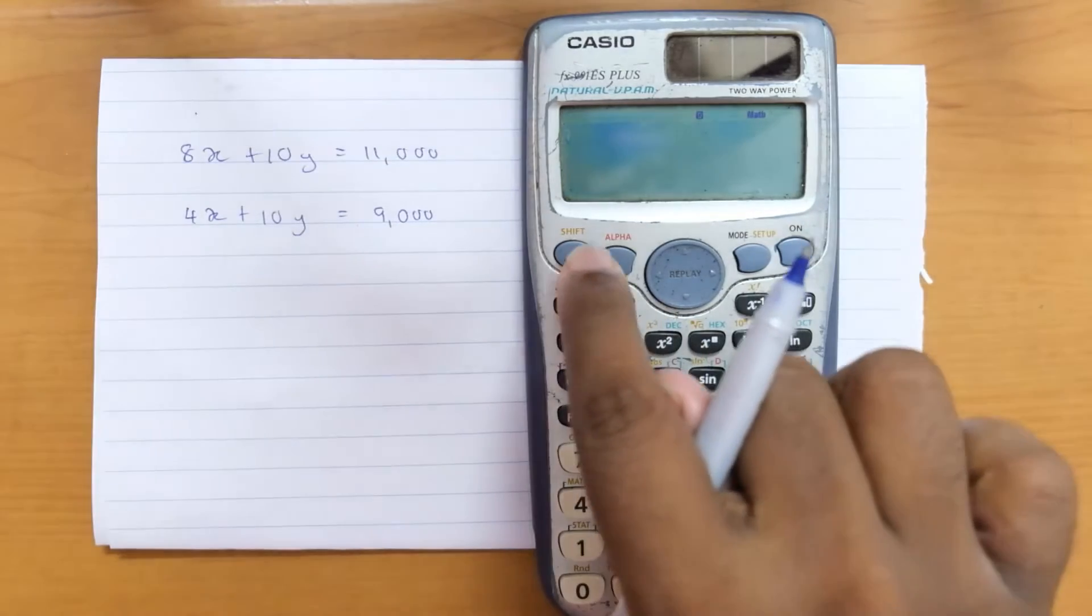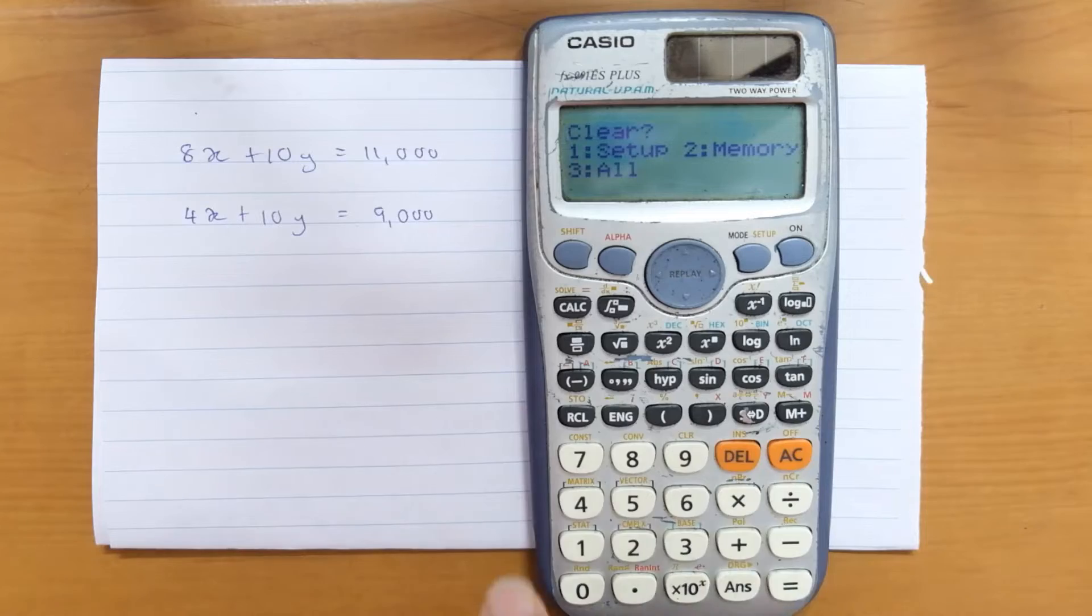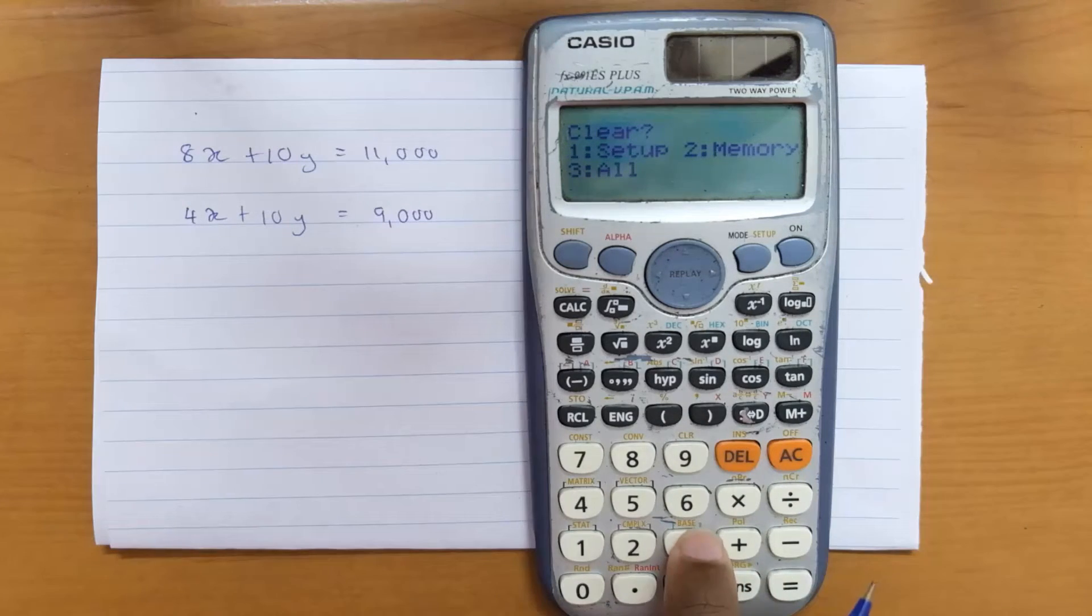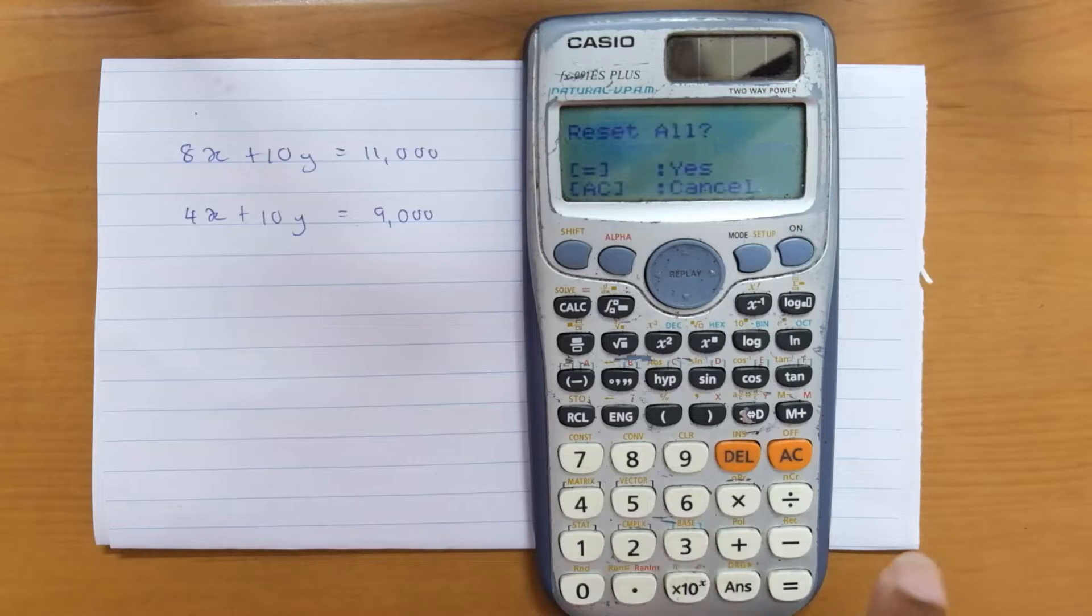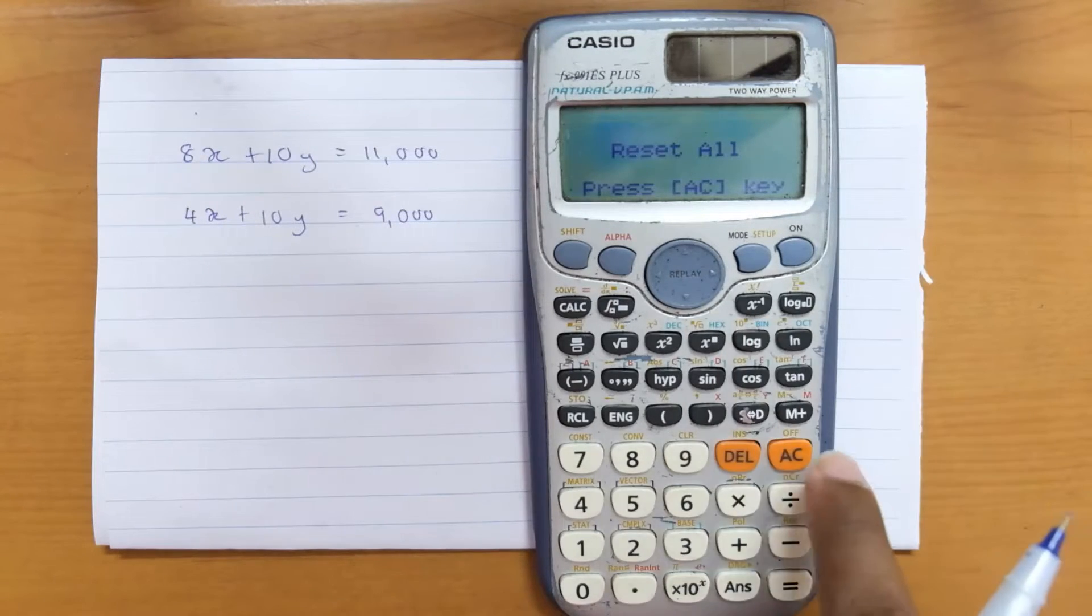How to clear the memory? Press the shift button, then 9. You will get a screen like this. You have to clear everything, which is number 3. Press number 3, then yes, equals, then press the AC key.